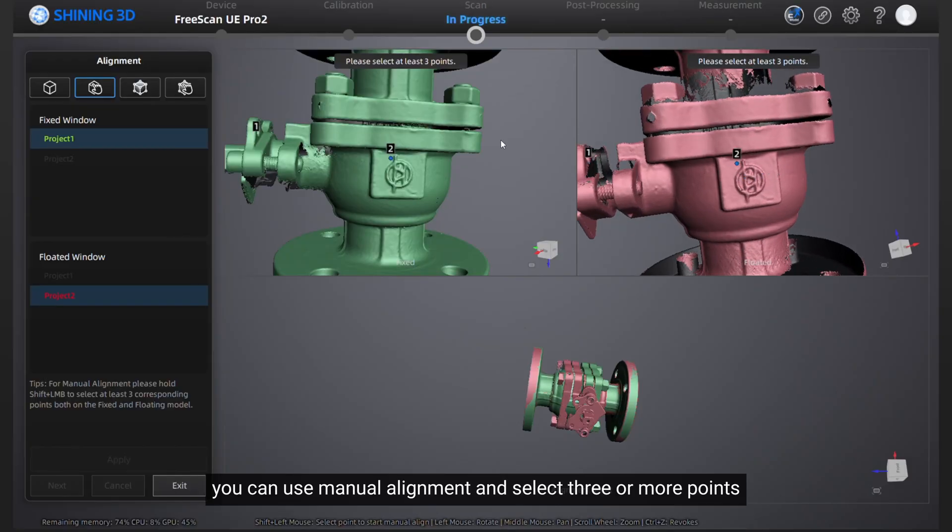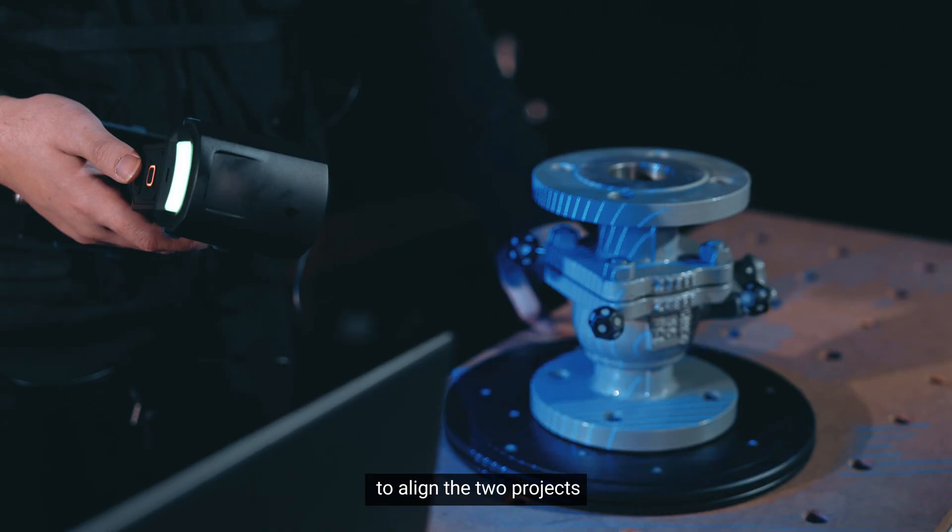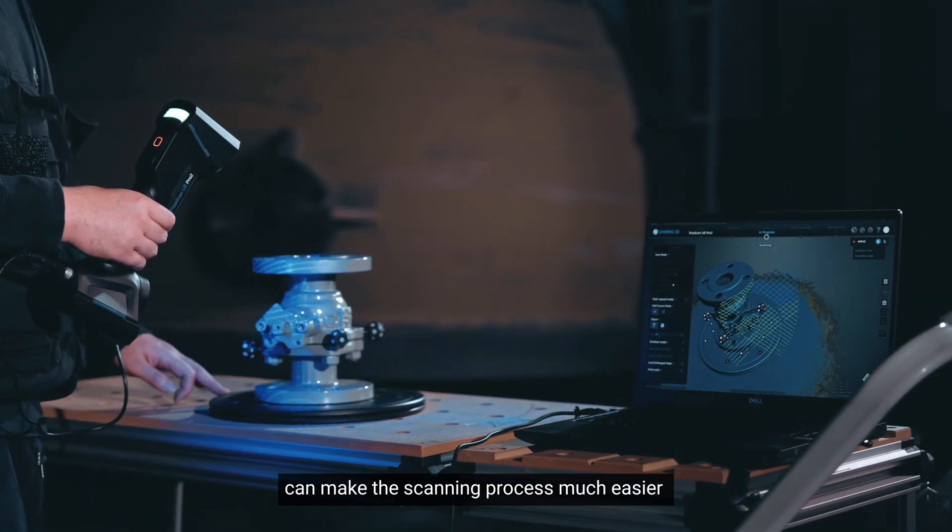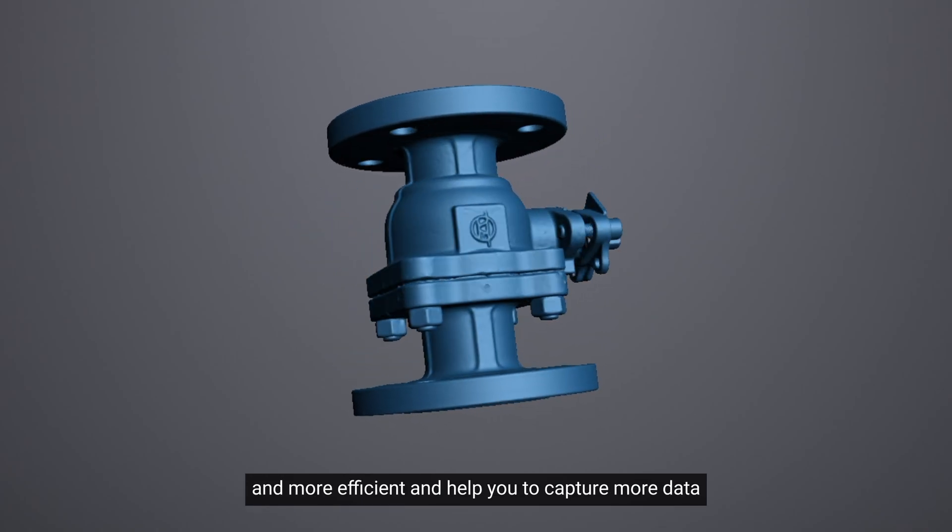We can use manual alignment and select three or more points to align the two projects. Using accessories like the turntable and the marker dice can make the scanning process much easier and more efficient and help you to capture more data.